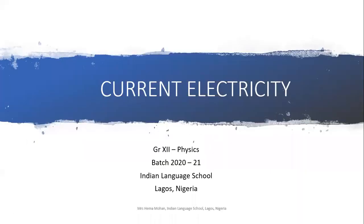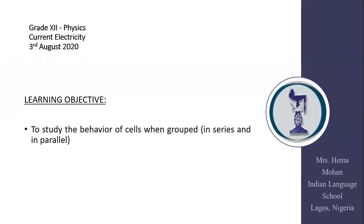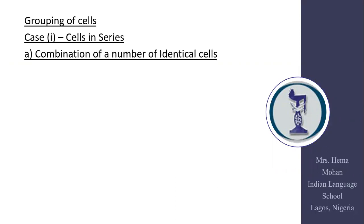Welcome to our next class in current electricity. Today's topic is how cells behave when grouped either in series or in parallel. We begin with the series combination of cells, and we will discuss each combination under two topics: what happens when cells are identical, and what happens when cells are non-identical.